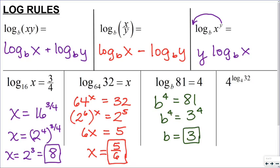This last one here is a rule you may or may not remember. 4 to the log base 4 of 32 equals 32. The rule is: b to the log base b of x will always equal x. I'm going to solve this on the next slide to show you why that property works.